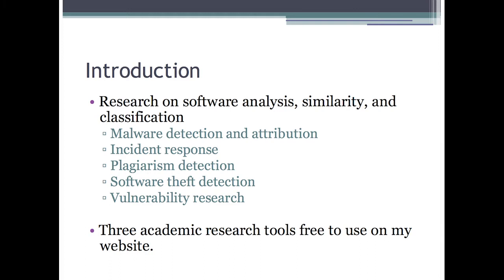I look at things like malware detection and malware attribution. These are examples of software similarity: detecting malware variants, attributing particular variants to known families, and identifying authors through that. That's useful in things like incident response. If you have a large number of samples, you want to identify which samples are important. You can use software similarity to group those samples into families.